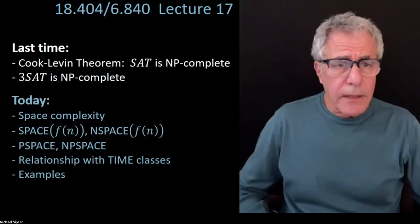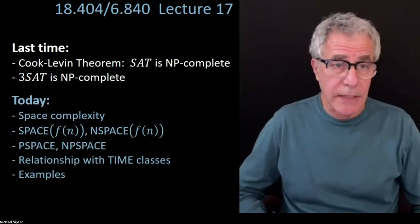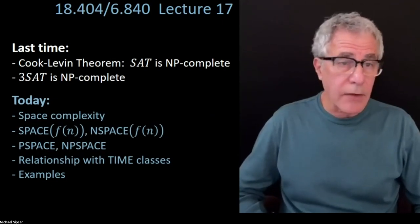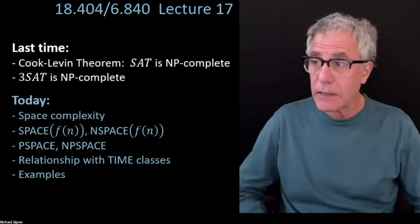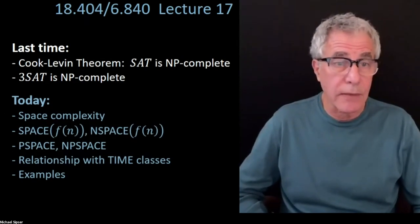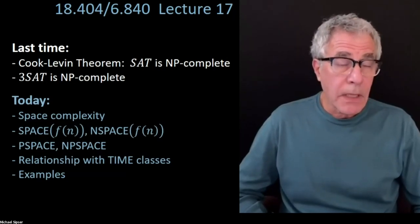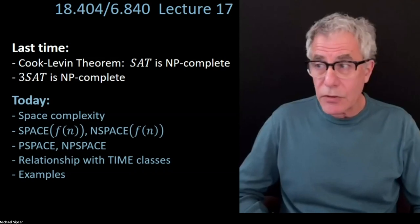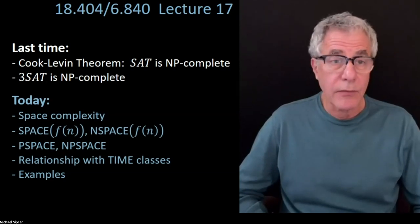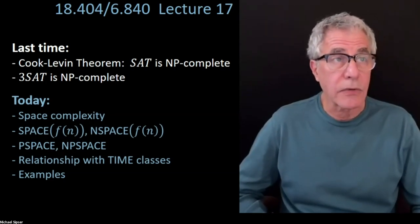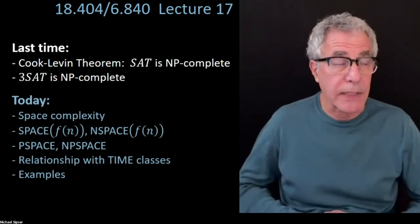We've been talking about P and NP and the time complexity classes. Today we're going to shift gears. We're going to talk about space complexity, or memory complexity — space complexity is what complexity theorists usually refer to it as. Time and space are the two most basic measures of complexity that we consider. Today we're going to look at the second of those two: space complexity.